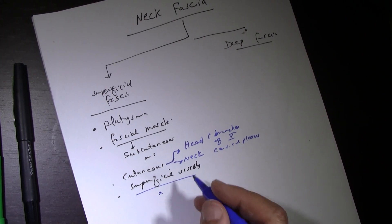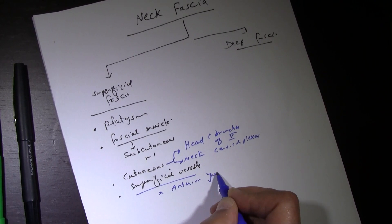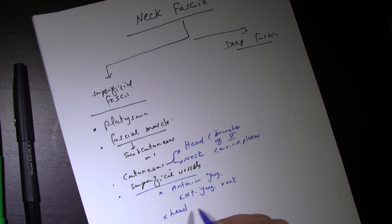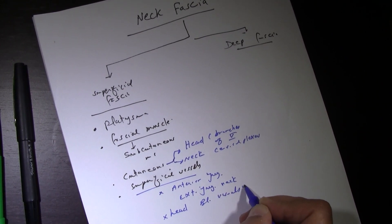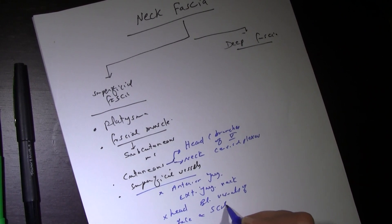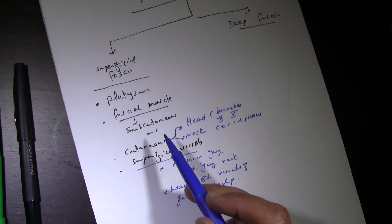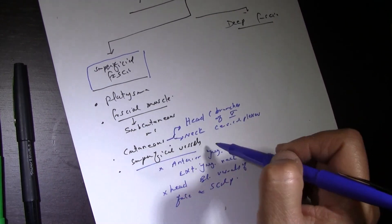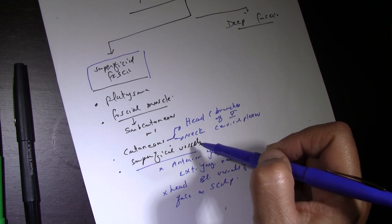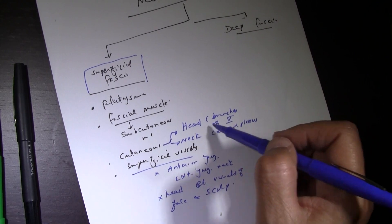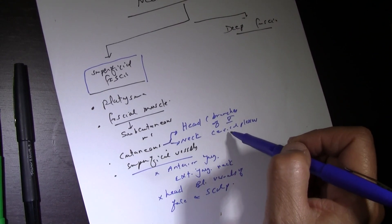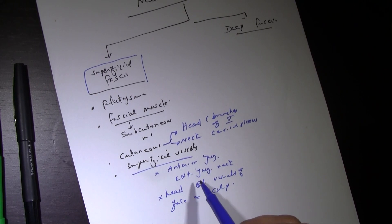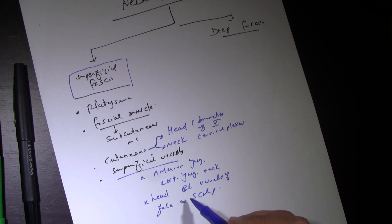Regarding superficial vessels located within the superficial fascia: in the neck we have the anterior jugular vein and the external jugular vein. In the head and face, the blood vessels of the face and scalp are subcutaneous. So the superficial fascia contains muscles, vessels, and nerves — the platysma and facial muscles, the anterior and external jugular veins, and cutaneous nerves.